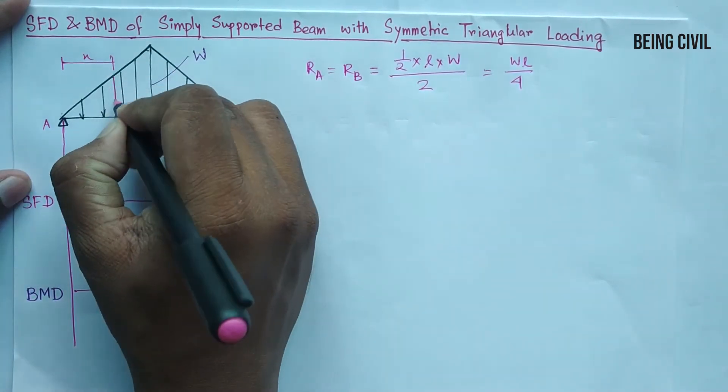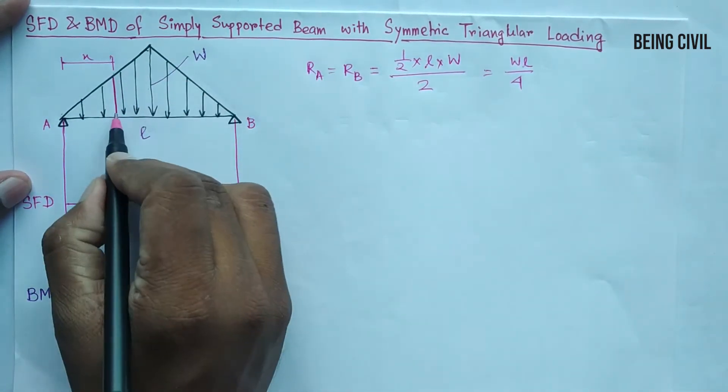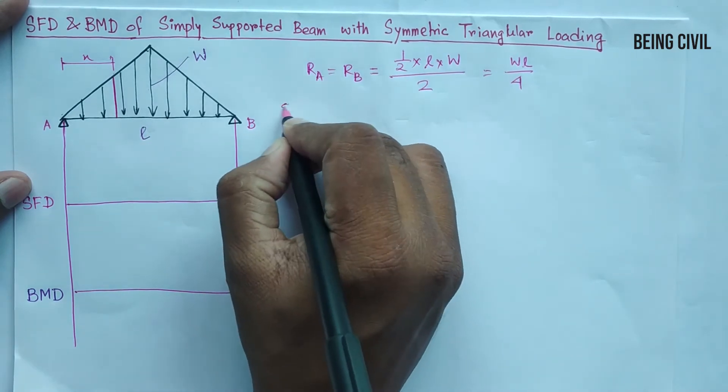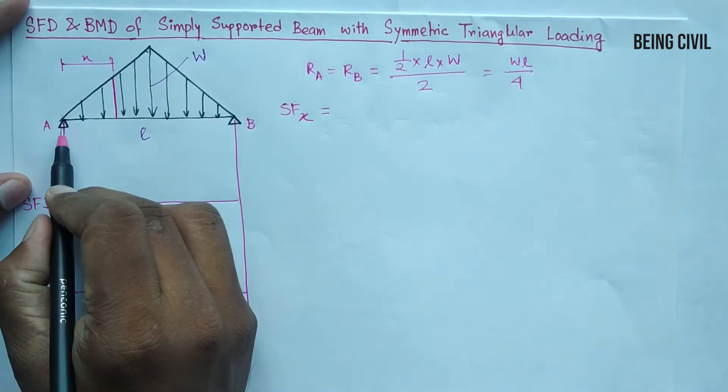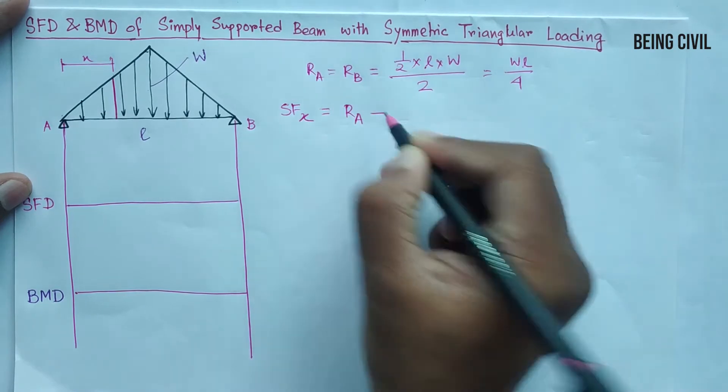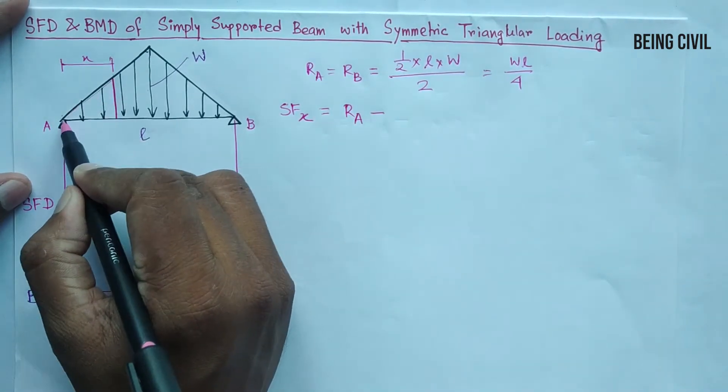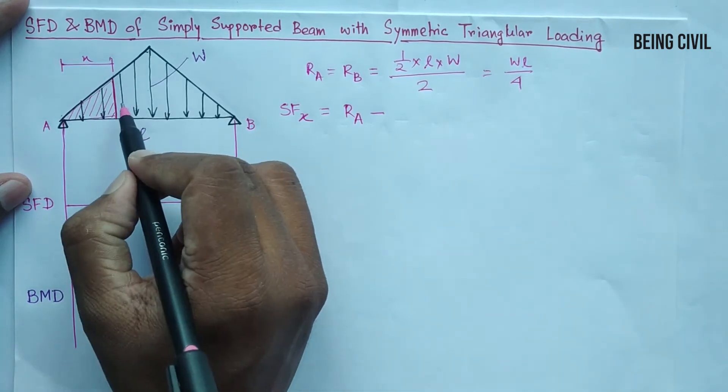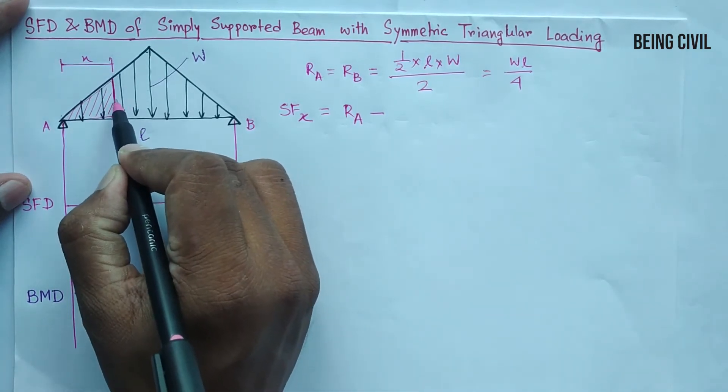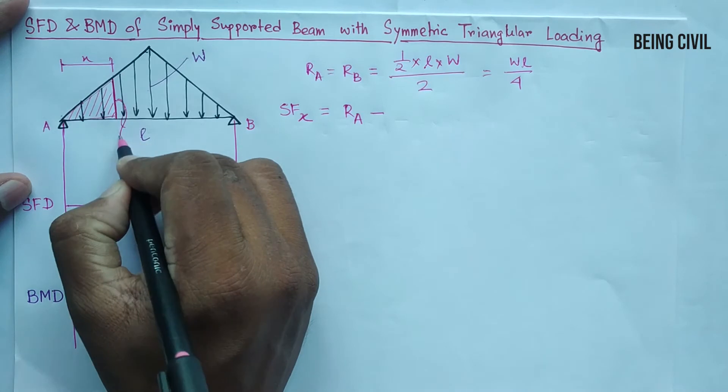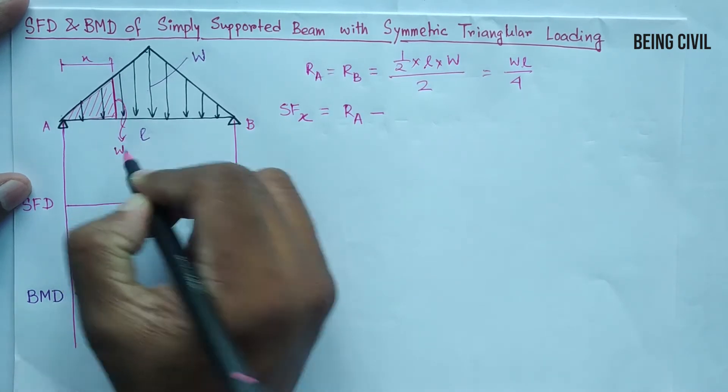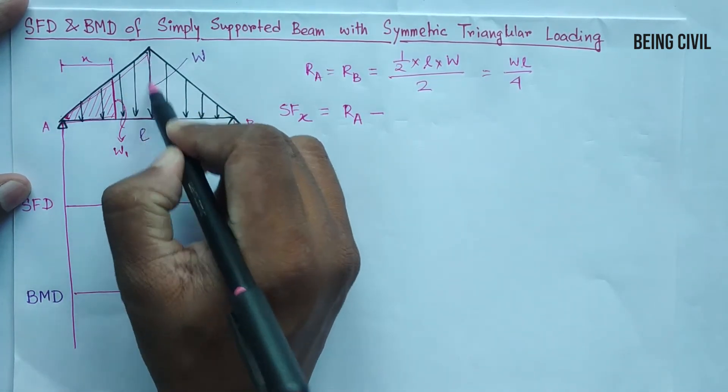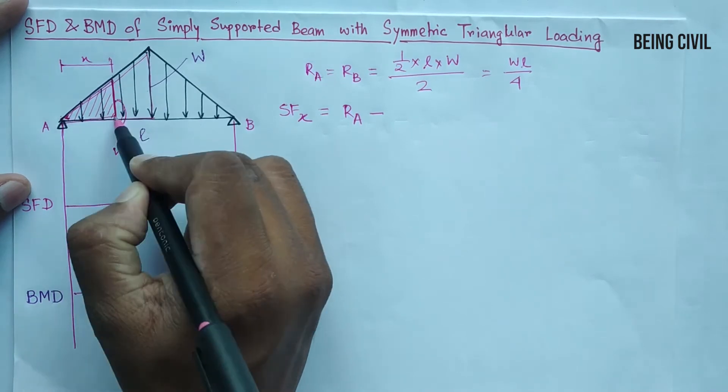And I have to calculate the shear force at this section. So SF at a distance of x equal to the upward force here is Ra minus the downward force is the area of this triangle. So first you have to know the height of this, say the height here is W1.